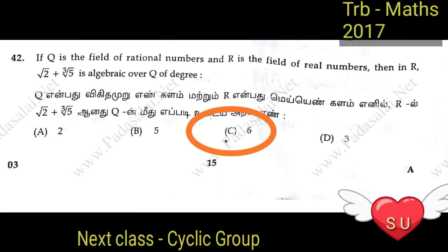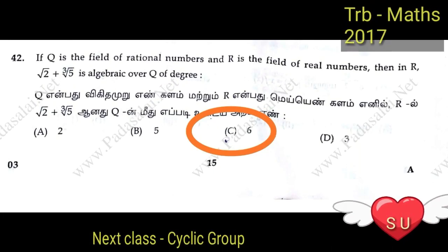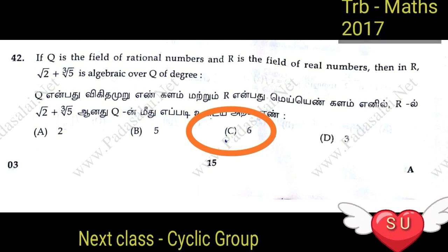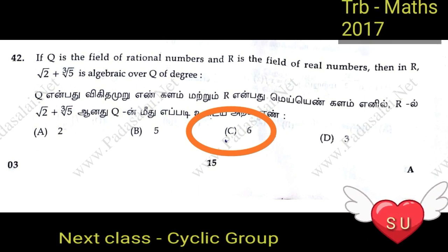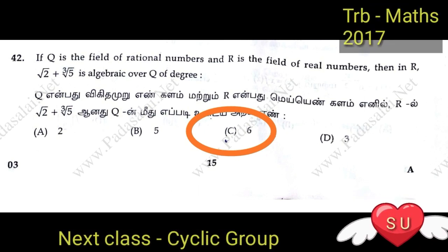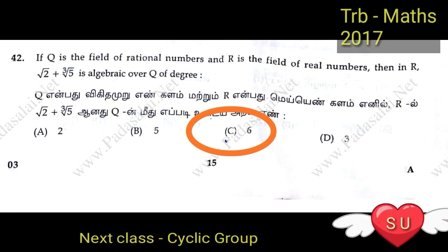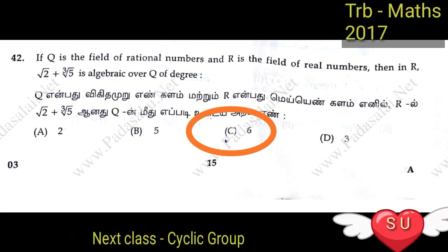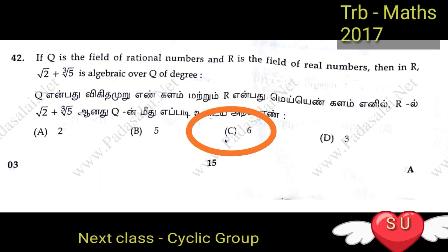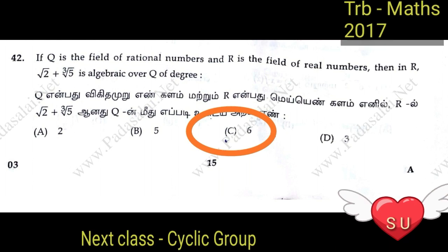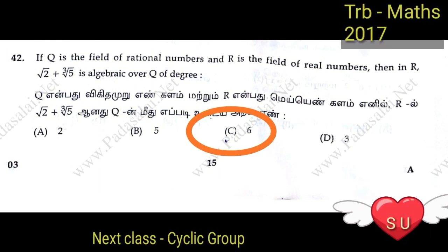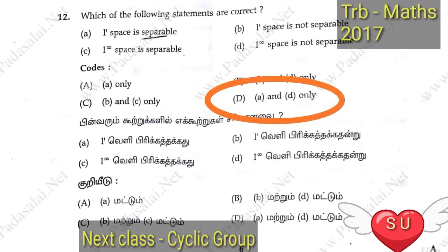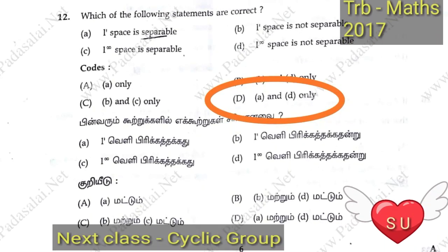Next: if Q is the field of rational numbers and R is the field of real numbers, then the degree of the algebraic extension Q with root 2 plus cube root of 5 over Q is 6.